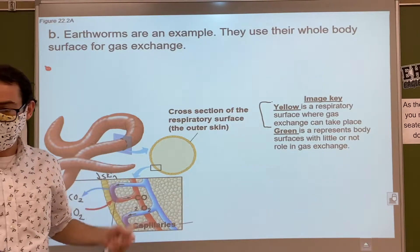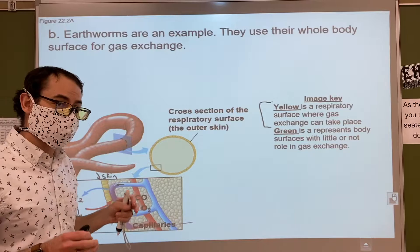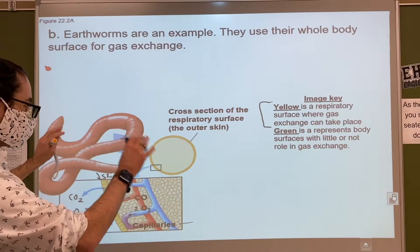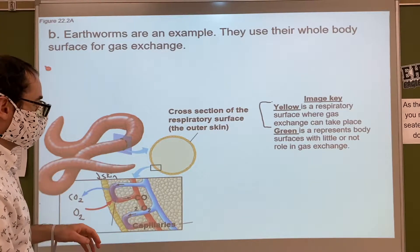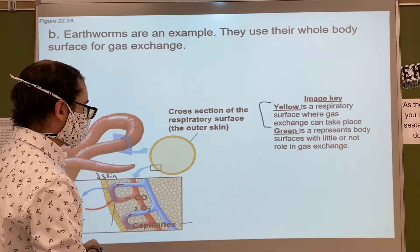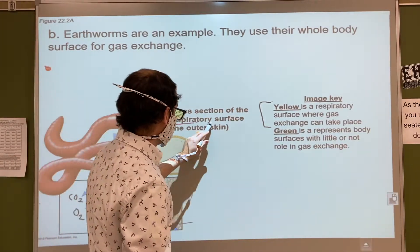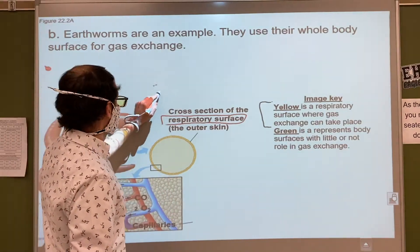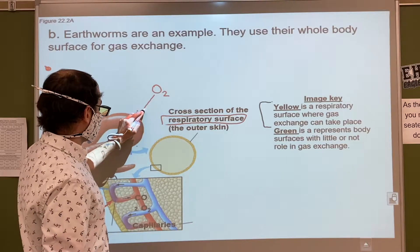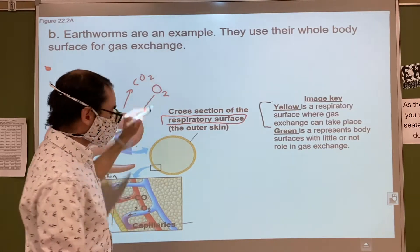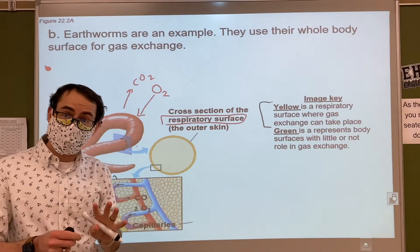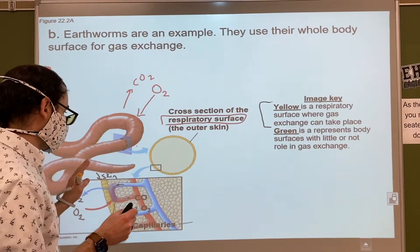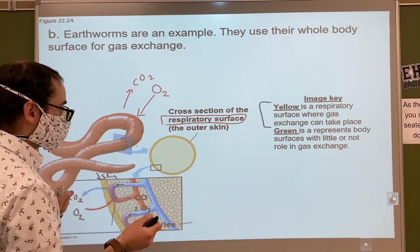We left off talking about earthworms, and we're going to start by going through different examples of animals and how they breathe. So we did talk about earthworms last time. Just to remind you, their respiratory surface is their outer skin — that's where gas exchange takes place, where O2 goes in and CO2 comes out. It always needs to be moist for this gas exchange to happen.